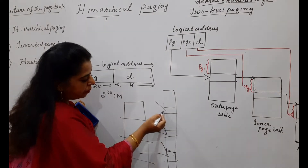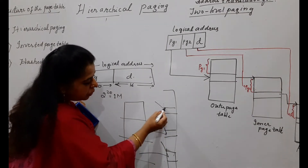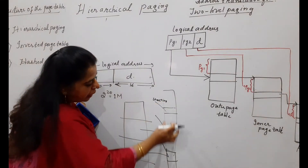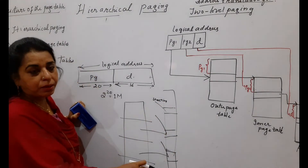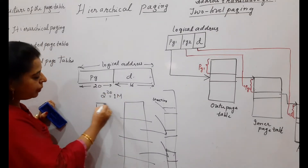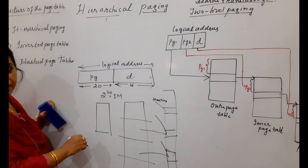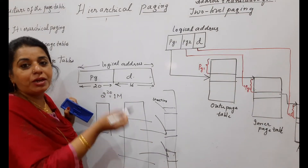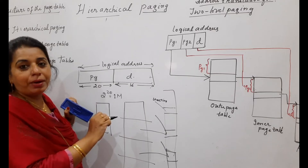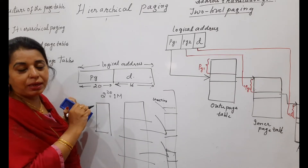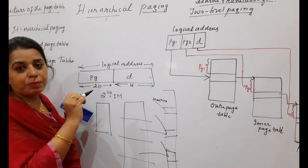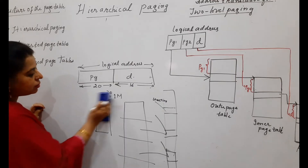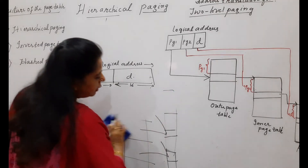Since the parts of the page table are stored at different locations, you need to find out where each part is stored — specifically, the starting address of each part. To store these starting addresses, you maintain one more page table called the outer page table. The outer page table points to the inner page table, which gives you the frame number — the starting address in physical memory where that page is present.